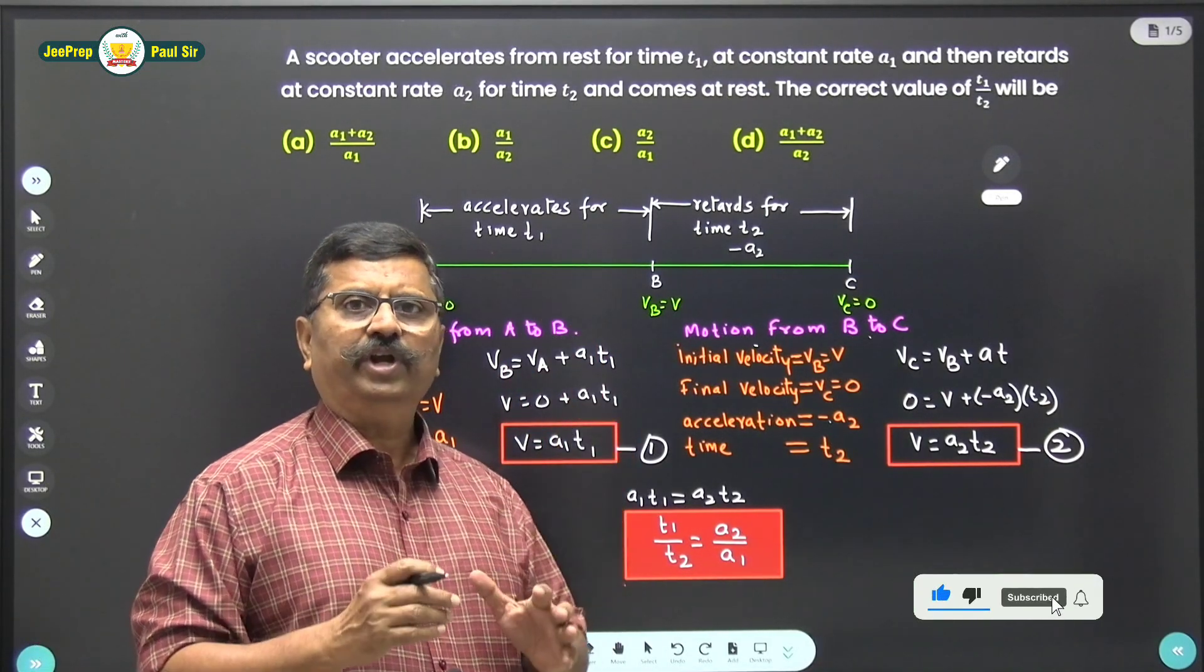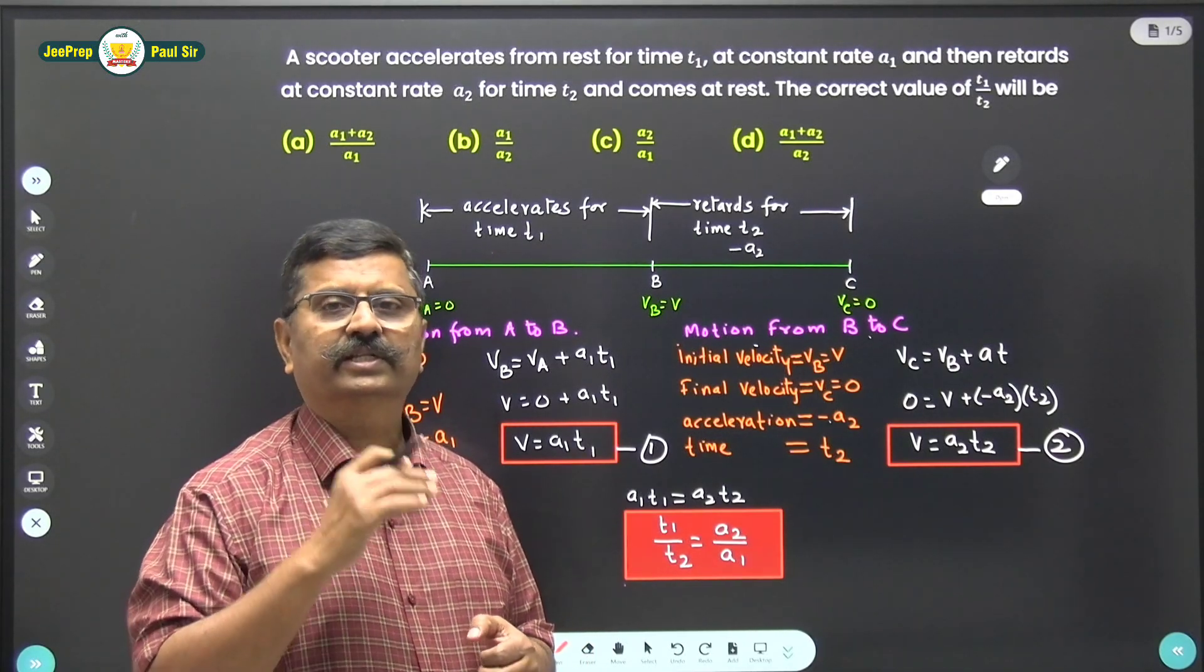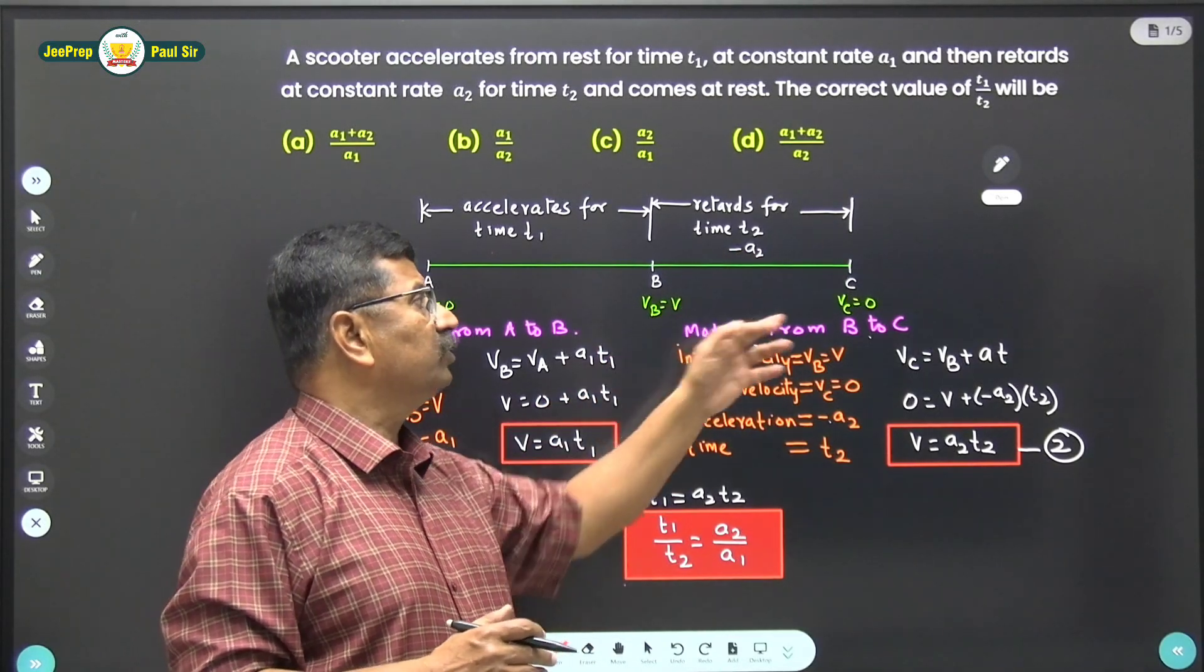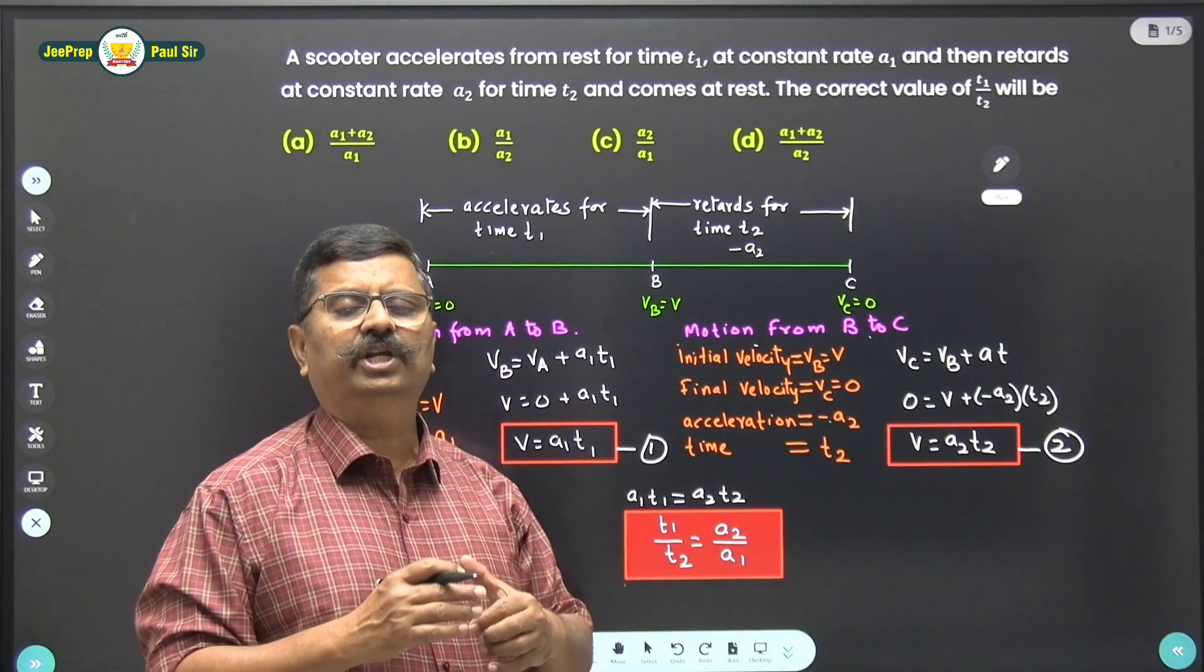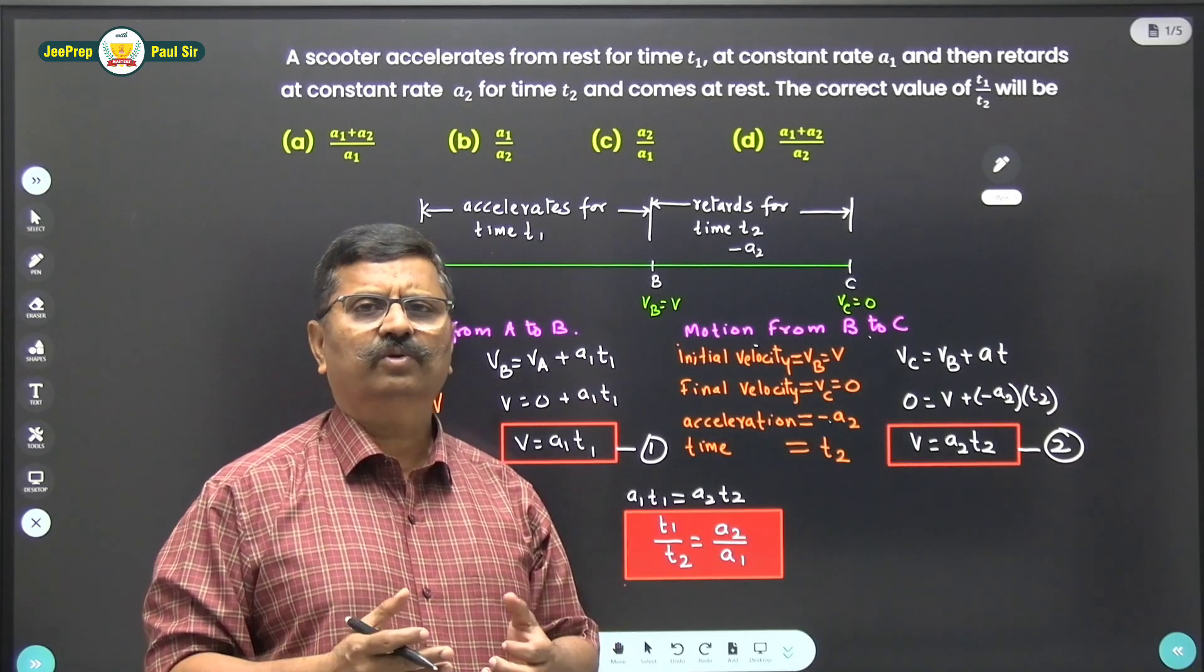Now at point B, the scooter applies brakes. Therefore, the scooter decelerates, retards with acceleration minus a2, and comes to rest at point C. This negative acceleration minus a2 will be there for time t2 seconds. Now let us see how to work out this.